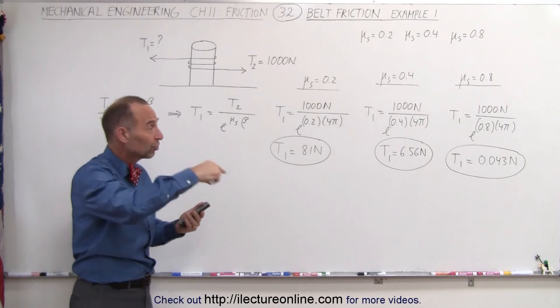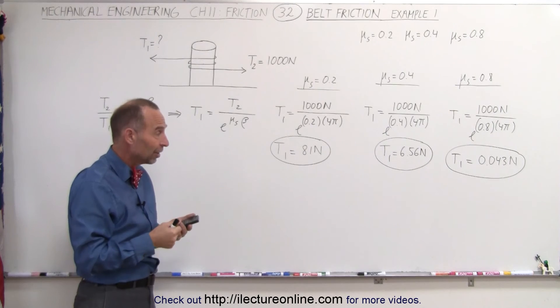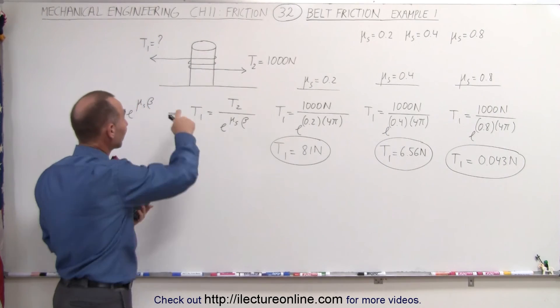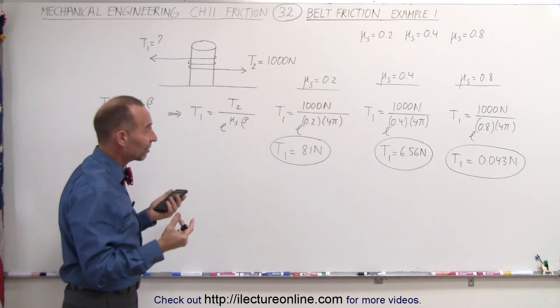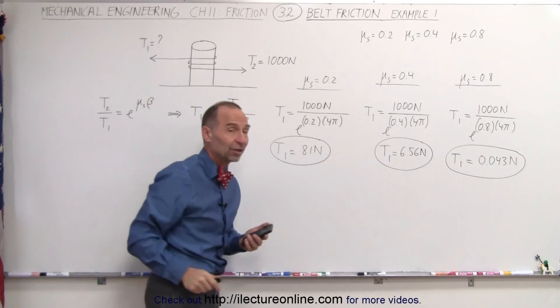It turns out that when you wrap strings or ropes or cables or anything around the post a number of times, the amount of tension you need on the other side to keep the rope from slipping is actually quite small and becomes very small as the coefficient of static friction increases.